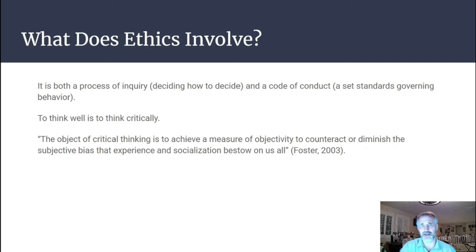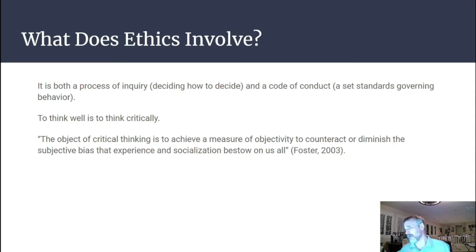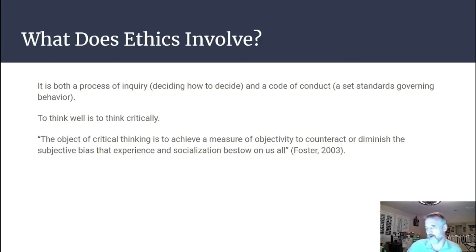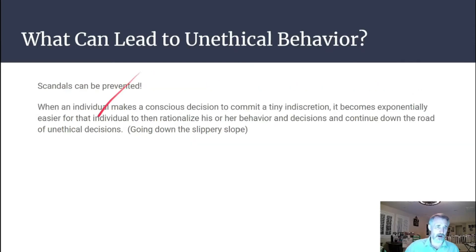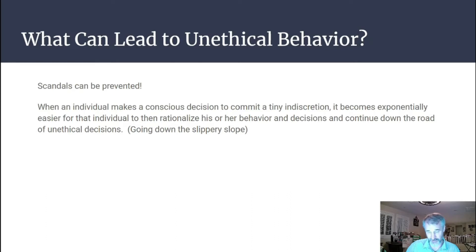A good scientist sets up studies so their biases can't affect results until they analyze the data. For example, a scientist receiving grant money to research a topic might be tempted to fudge results or manipulate data to show progress and secure more funding. They have to be careful not to let bias creep in. Scandals can be prevented, but once an individual makes a small indiscretion, it becomes exponentially easier to rationalize further unethical decisions — this is called going down the slippery slope.